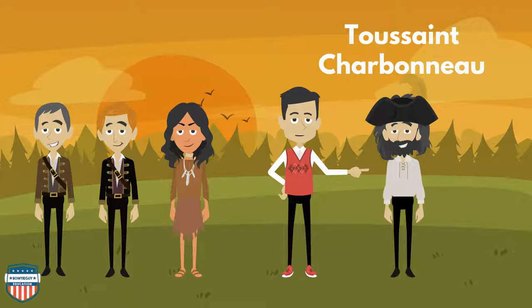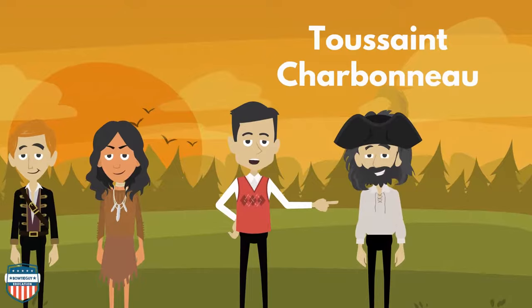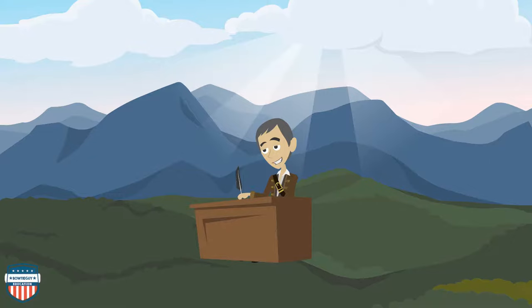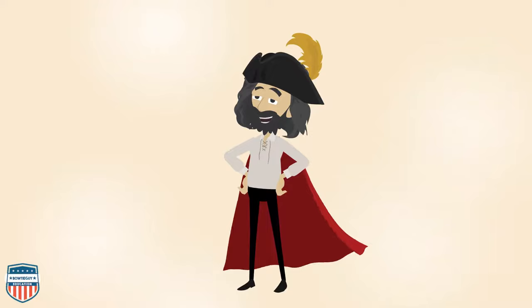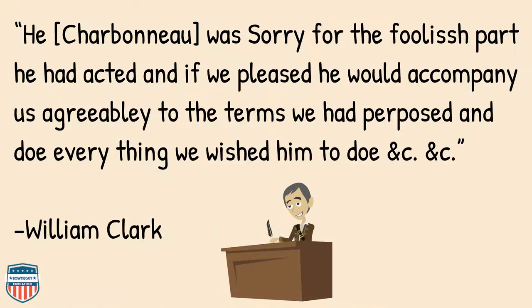Now let's put our knowledge into action. Let's take a look at first-hand accounts, second-hand accounts, and primary and secondary sources about Toussaint Charbonneau. This is what William Clark wrote: 'Fourth of November — a French man named Charbonneau who speaks the big belly language visited us. He wished to hire and informed us his two squaws were Snake Indians. We engaged him to go on with us and take one of his wives to interpret the Snake language.' He — Charbonneau — was sorry for his foolish part he had acted, and if we pleased he would accompany us agreeably.